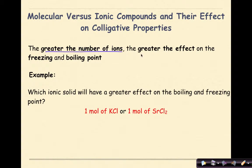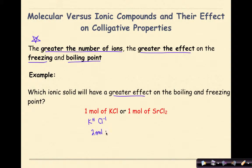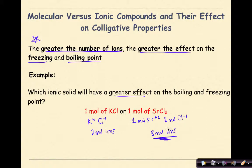The greater the number of ions, the greater the effect on the freezing and boiling points — that is our key takeaway. For example, one mole of potassium chloride (KCl) gives one mole of K⁺ ions and one mole of Cl⁻ ions, for a total of two moles of ions. Compare that to one mole of strontium chloride (SrCl₂), which gives one mole of Sr²⁺ ions and two moles of Cl⁻ ions, totaling three moles of ions. Therefore, strontium chloride has a greater effect on the freezing and boiling points.